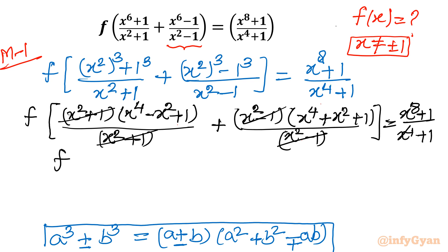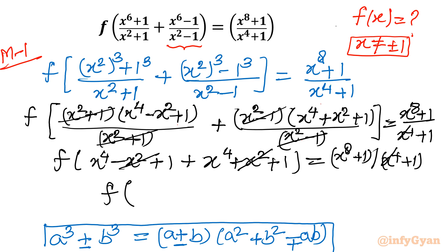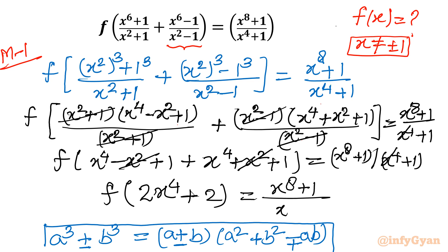Now let us simplify what we can cancel. We have f of (x⁴-x²+1) for the first term, and (x⁴+x²+1) for the second term. Adding these two together gives f of (2x⁴+2), and the right hand side remains (x⁸+1)/(x⁴+1).